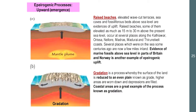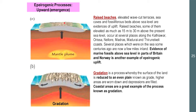Epeirogenic upward movements, also known as emergence, are best exemplified by raised beaches. This happens when there is a mantle plume — an enlargement of the mantle — which pushes against the asthenosphere and lithosphere, eventually giving rise to a beach or land mass coming up from sea level. We've seen evidence of marine fossils above sea level in parts of Britain and Norway, meaning that part was raised up from the sea.